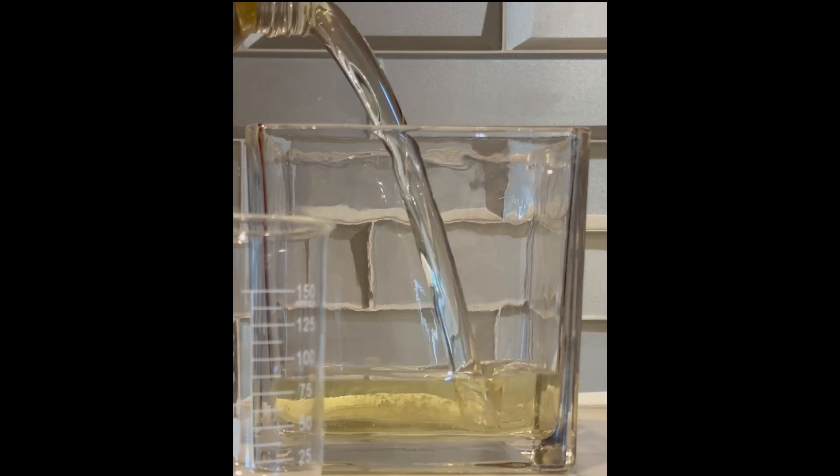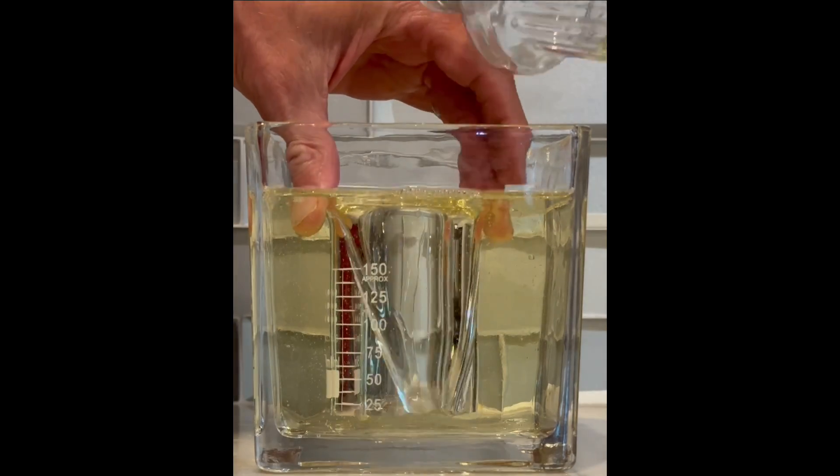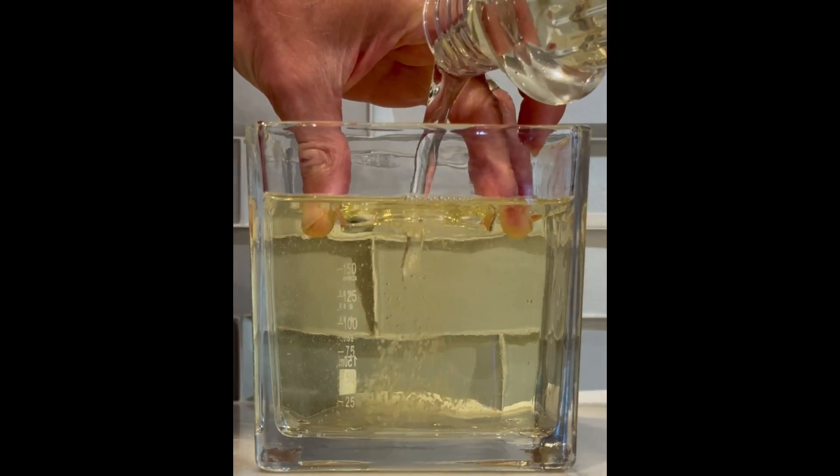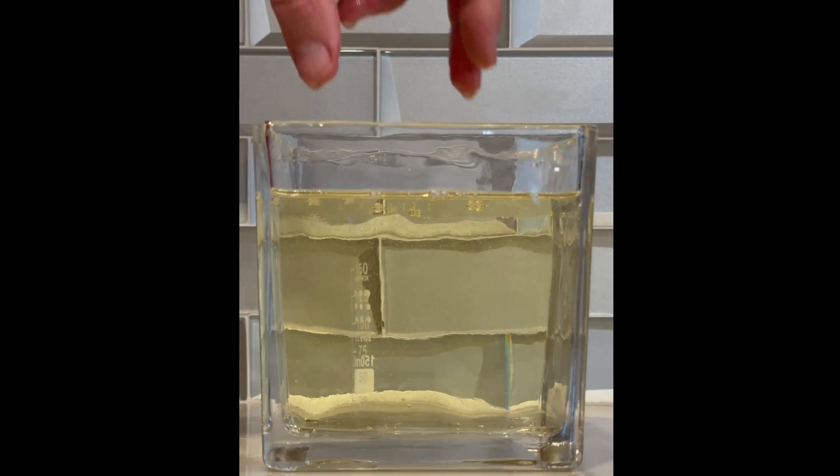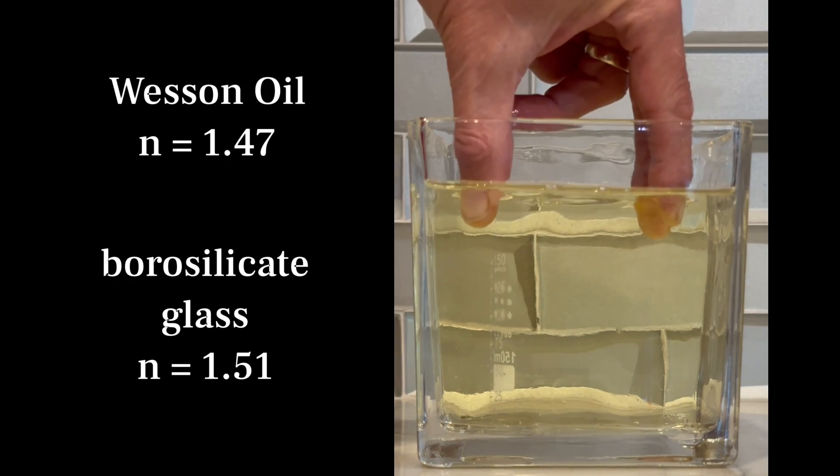This effect is the same that's observed in the disappearing beaker trick, where oil is poured into a beaker submerged in vegetable oil. Upon doing so, it looks like the beaker disappears. This occurs because the index of refraction of the oil and the beaker are nearly identical.